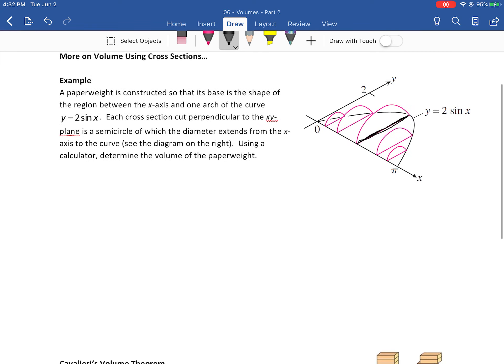So it says use a calculator to determine the volume. All that means is when the time comes to take the integral we can use our calculator. Well the big thing I want you to get from this is that the diameter of each of these circles is 2 sine x. So we got to do a little thinking there and go okay well that means the radius at any value is half of that so it's just sine of x.